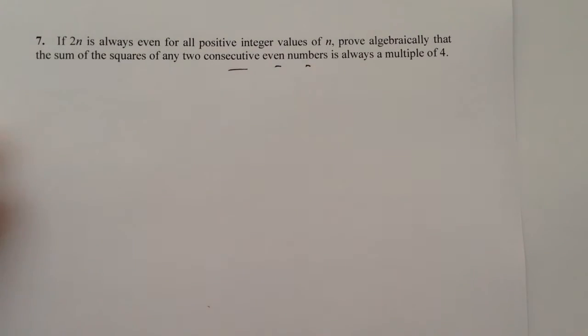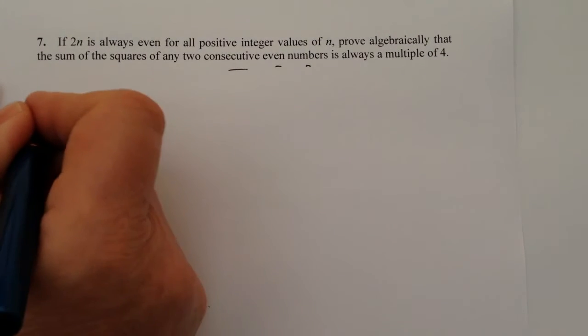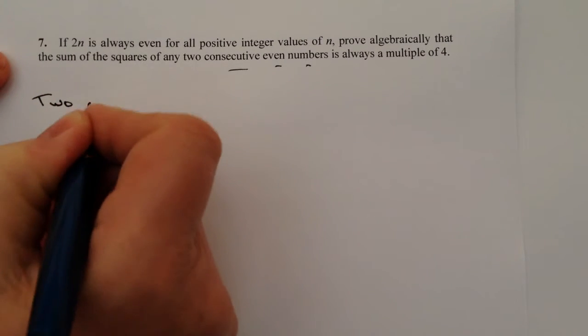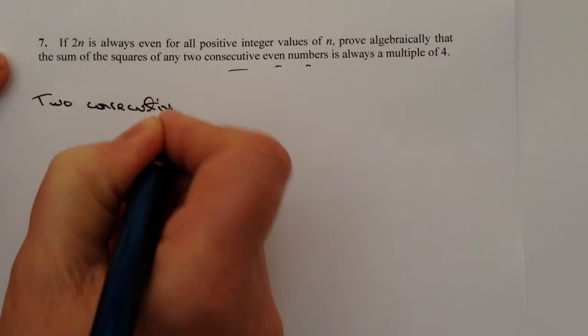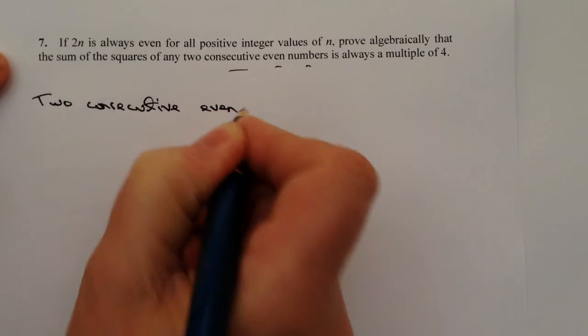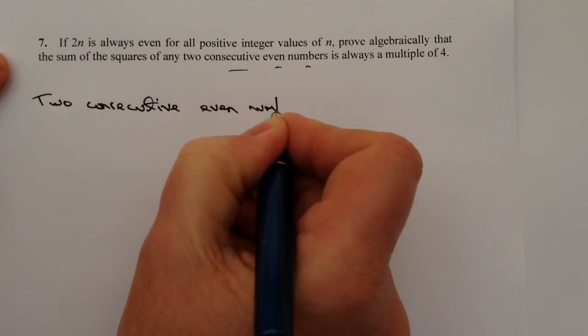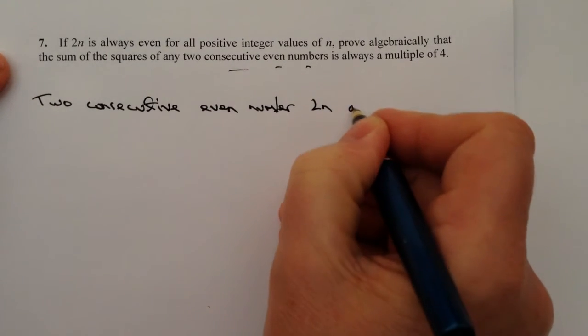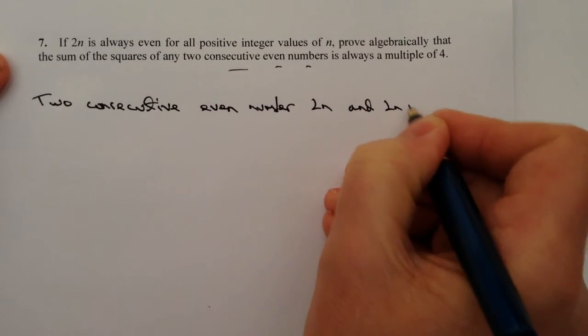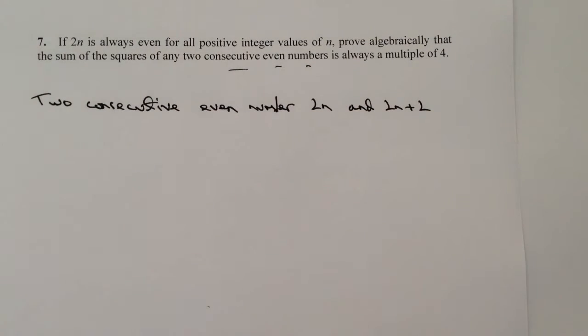So that's the bit that's important - consecutive even numbers. Well, let's look at that. The two consecutive even numbers must be 2n and 2n plus 2.